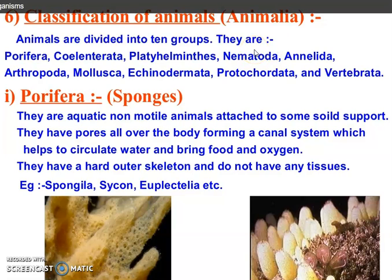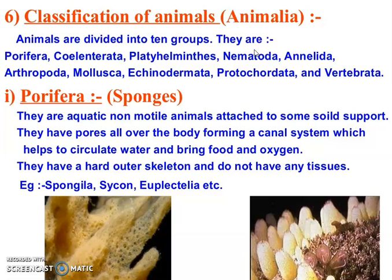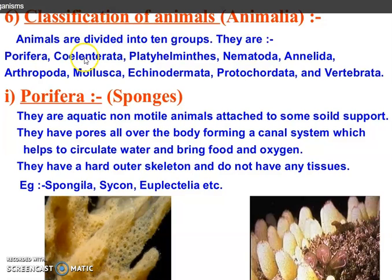Under this classification, we are going to discuss about phylum Porifera, Coelenterata, Platyhelminthes, Nematoda, Annelida, Arthropoda, Mollusca, and Echinodermata. Then we will come to Vertebrata.